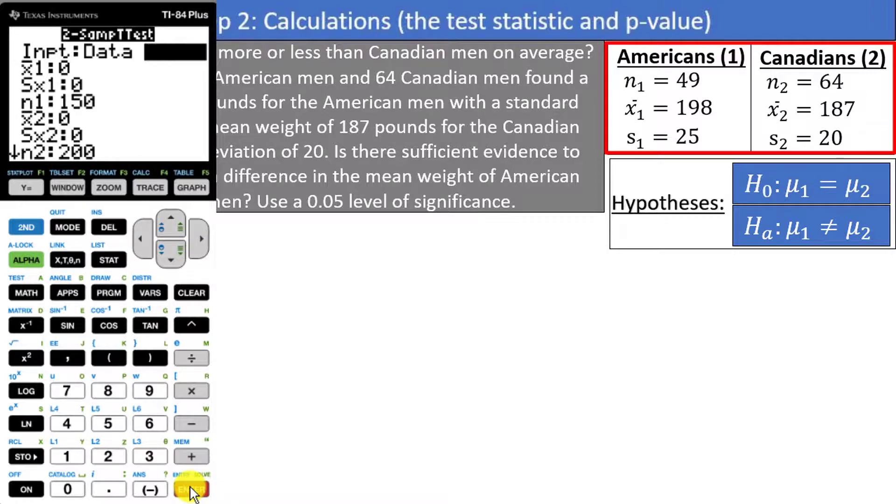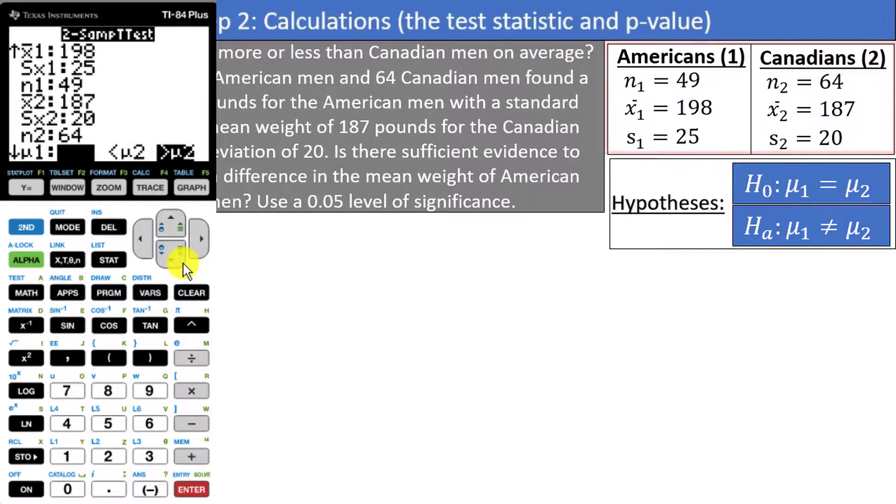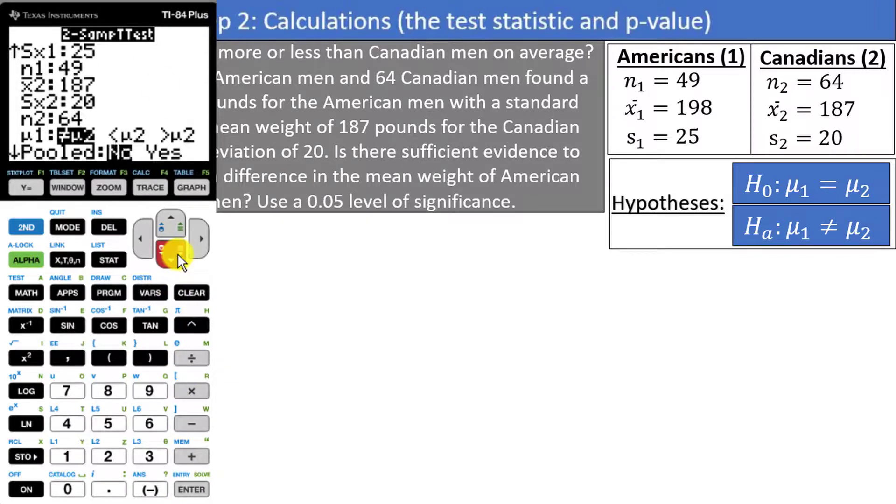Enter in all the numbers that we copied down earlier. x bar 1 is 198, s1 is 25, and n1 is 49. x bar 2 is 187, s2 is 20, and n2 is 64. Here, the calculator is asking for your alternative hypothesis. Our alternative hypothesis is that mu1 is not equal to mu2, so we select the first option. For my students, we will always choose the unpooled option, which will calculate the second test statistic we looked at earlier, assuming that the standard deviations are not equal.